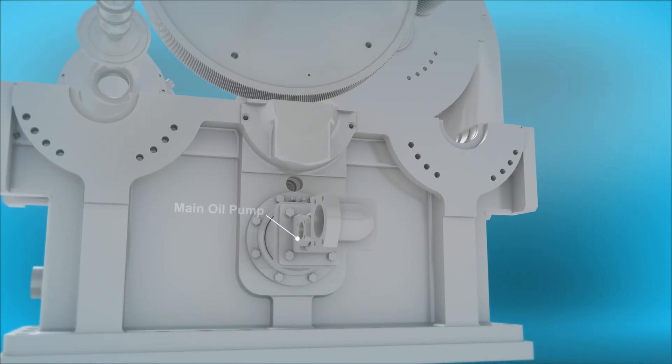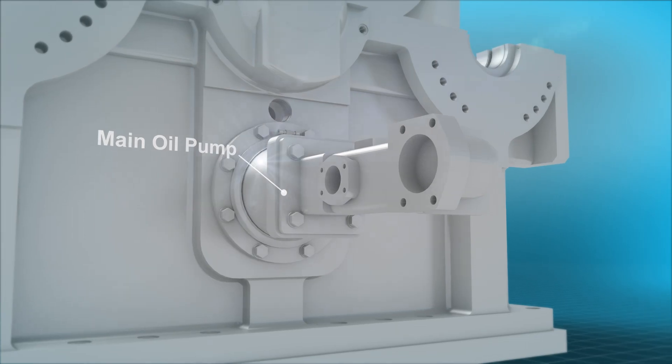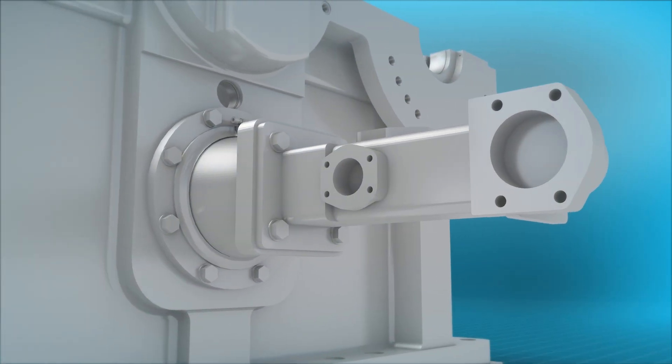Compressor bearings and gears are lubricated by the main lube oil pump, which is driven through the bull gear for reliable oil flow.